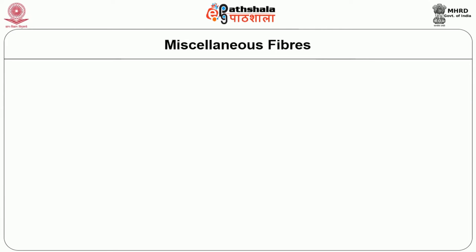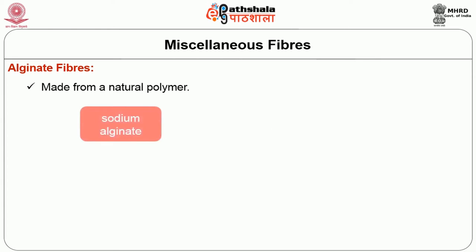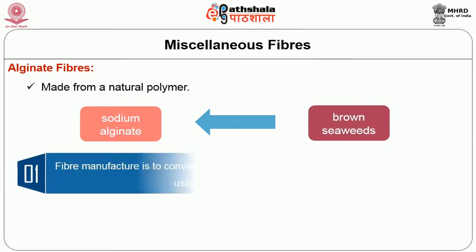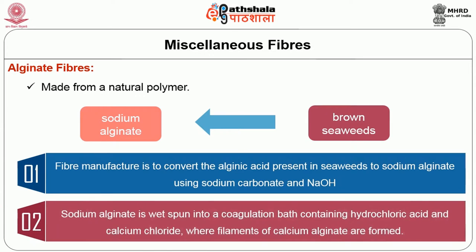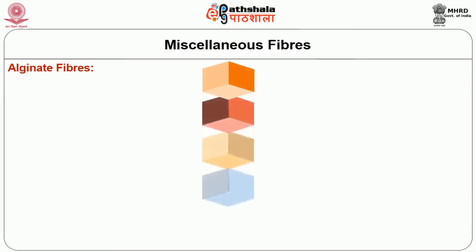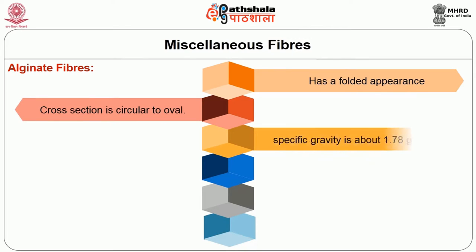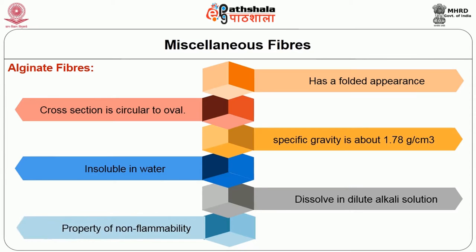Now let us discuss the miscellaneous fibers. The first miscellaneous fiber is the alginate fiber. Alginate fibers are made from the natural polymer sodium alginate, extracted from brown seaweeds. The first step in fiber manufacture is to convert the alginic acid present in seaweed to sodium alginate using sodium carbonate and sodium hydroxide. Then, sodium alginate is wet-spun into a coagulation bath containing hydrochloric acid and calcium chloride, where filaments of calcium alginate are formed. Alginate fibers have a folded appearance and their cross section is circular to oval. Its specific gravity is about 1.78 grams per cubic centimeter. Alginate fibers are insoluble in water but their wet strength is poor. Alginate fibers readily dissolve in dilute alkali solutions, even in soap solutions.